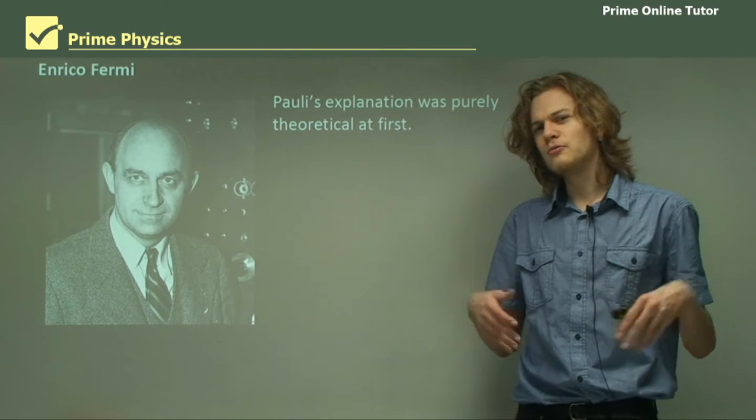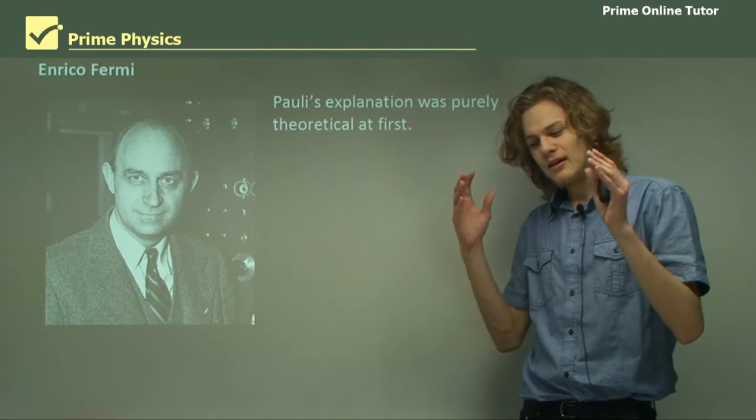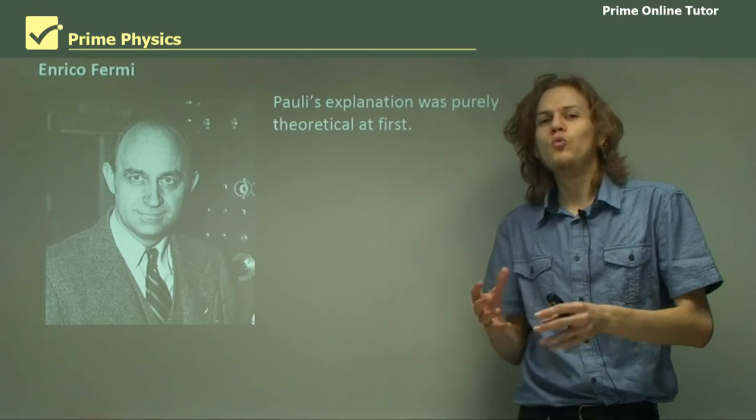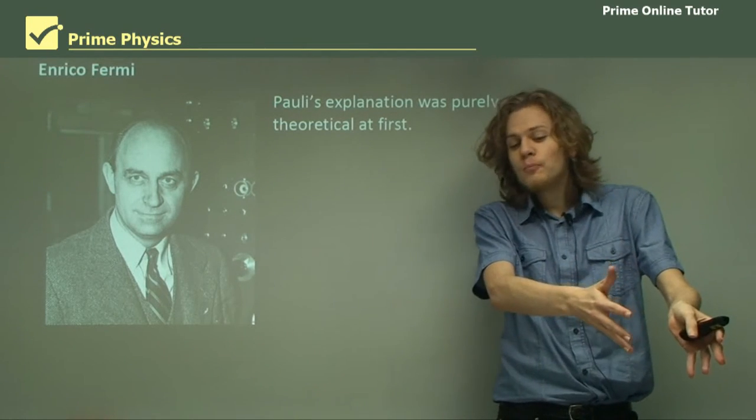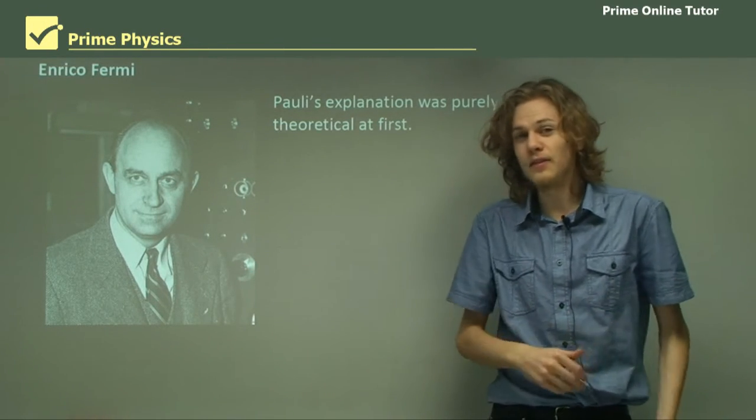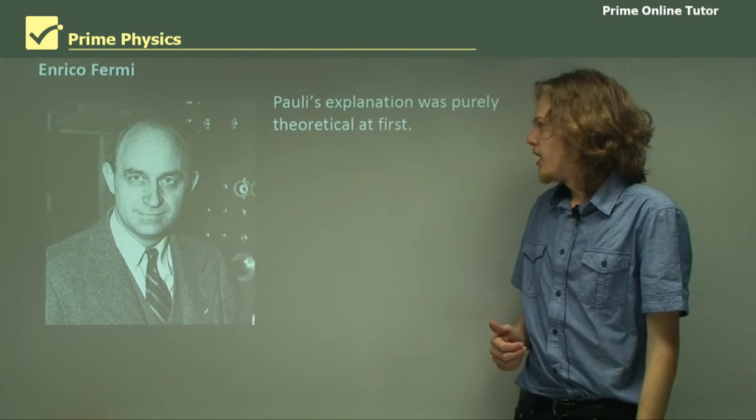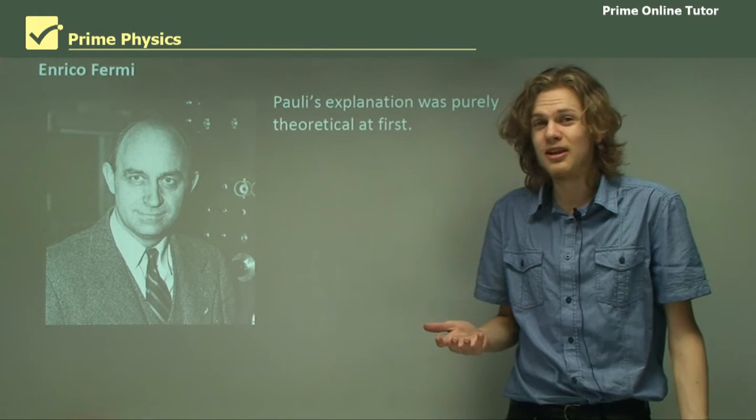In previous lessons, we've learned that carbon can decay into nitrogen if it releases a beta particle, but what we didn't point out was that there was also another almost invisible particle coming out as well, and that's called the neutrino. Pauli's explanation was purely theoretical. He said there's missing energy somewhere, so we'll put it in this invisible massless particle.